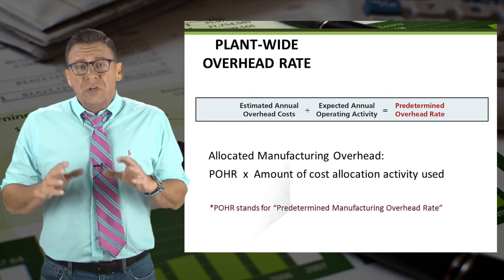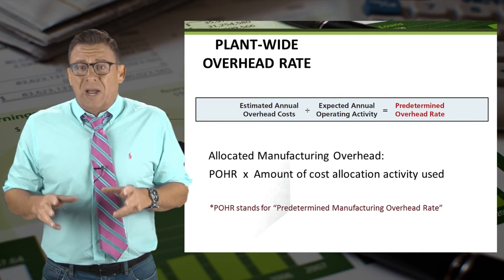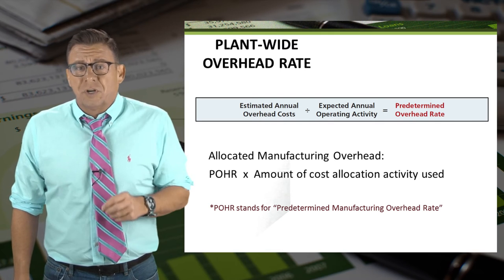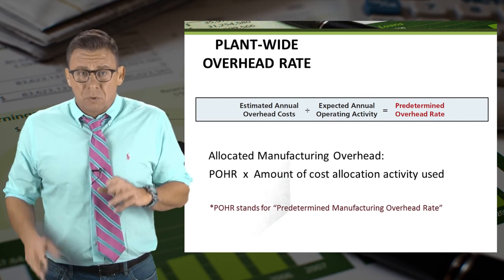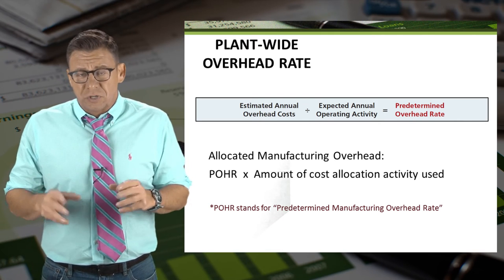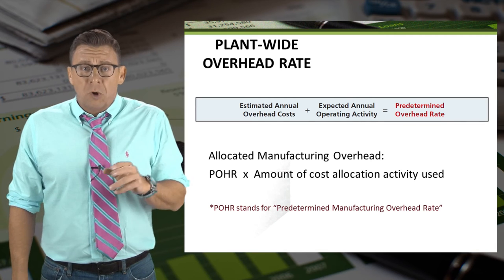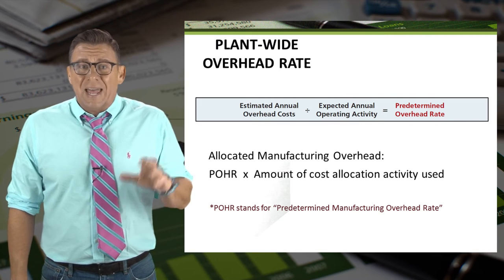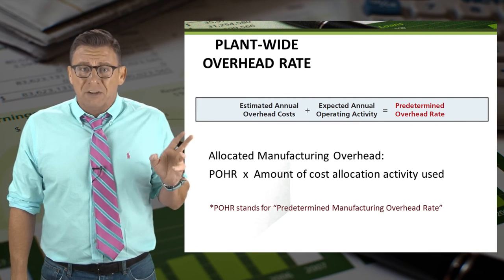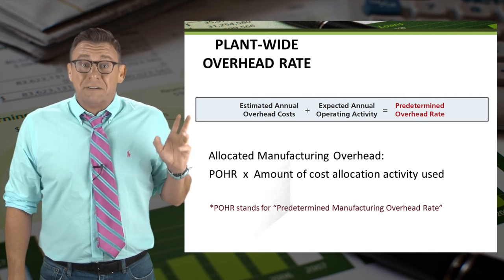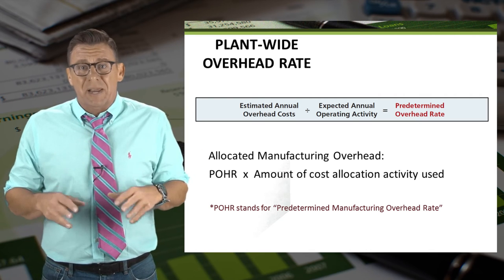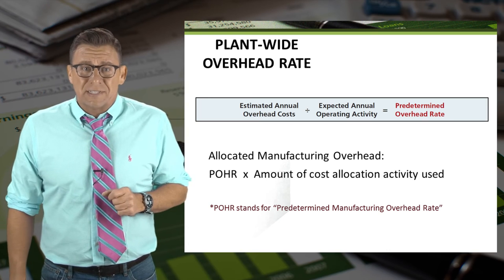When you first learned about a plant-wide rate, we used the term predetermined overhead rate — remember that these terms are interchangeable. The formula for the plant-wide rate is estimated annual manufacturing plant overhead costs divided by the total estimated annual allocation basis.